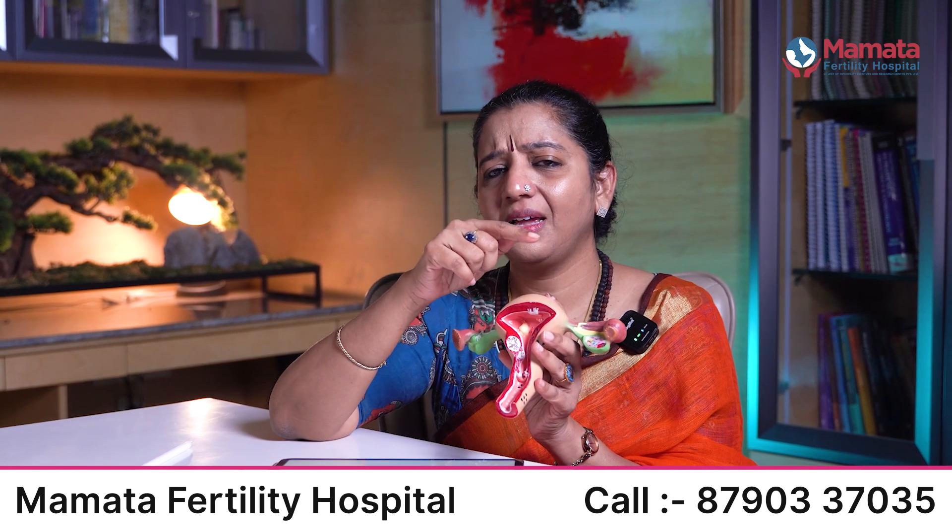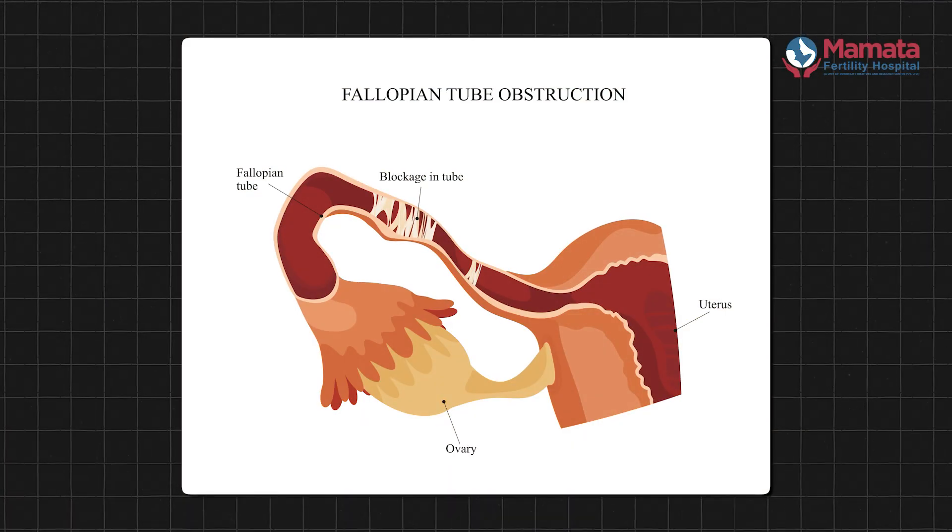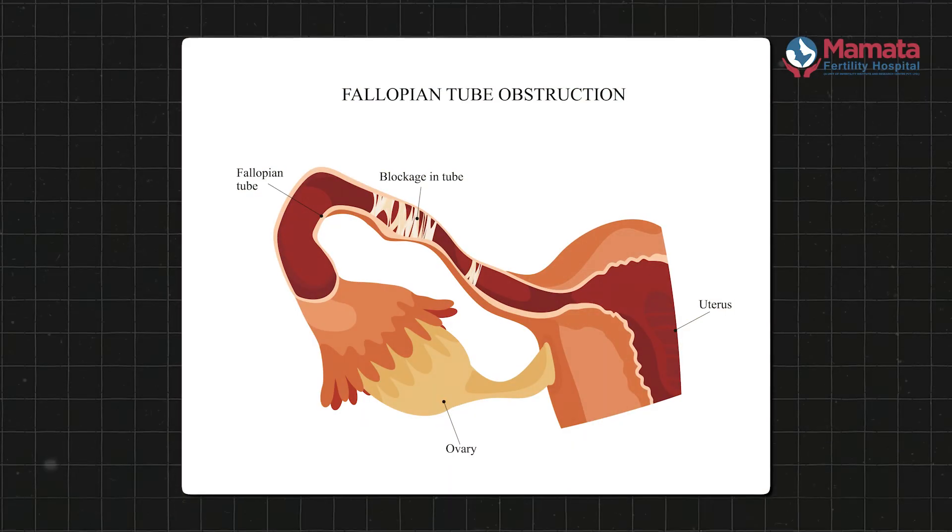In natural conception, ectopic pregnancy occurs in less than 0.5% of cases. But if we have an unhealthy tube — for example, due to a previous infection causing damage — the risk of ectopic pregnancy in natural pregnancies increases.